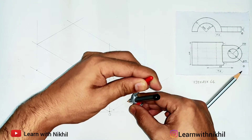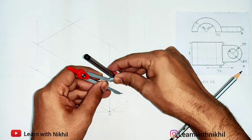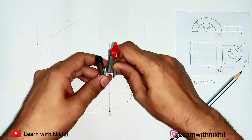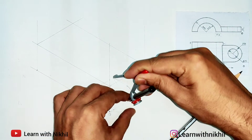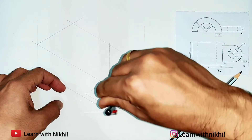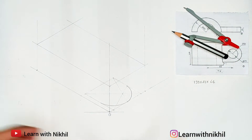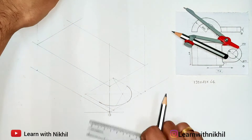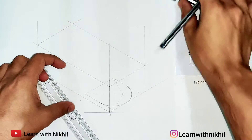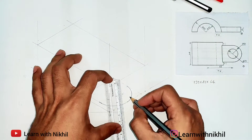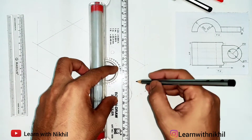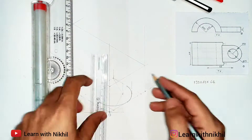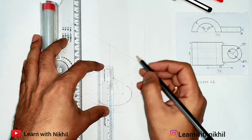Draw this semicircle lightly because the bottom part of the semicircle will be hidden and erased. Draw this part lightly first. The second curve you can make dark, but the first curve will be hidden. The semicircle has a thickness also. This is the bottom part of the semicircle. Now the same semicircle has to be plotted above — the height is 15 millimeters, so we will transfer these points at a height of 15 millimeters.